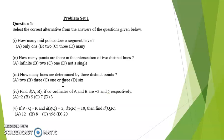Sub-question 4: Find distance AB if coordinates of A and B are minus 2 and 5 respectively. When we solve this, we get 5 minus of minus 2, which is 5 plus 2. Answer is 7. So we have option C: 7.